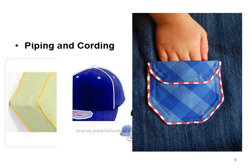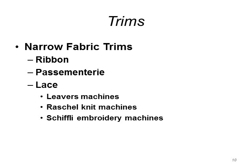Piping and cording are commonly used in ready-to-wear apparel to add interest or detail. Here you can see it around the pocket on a baseball cap to emphasize the seam lines, and here is cording around the edge of a seat cushion. Next are narrow fabric trims, which consist of ribbon, passimentary, and lace.